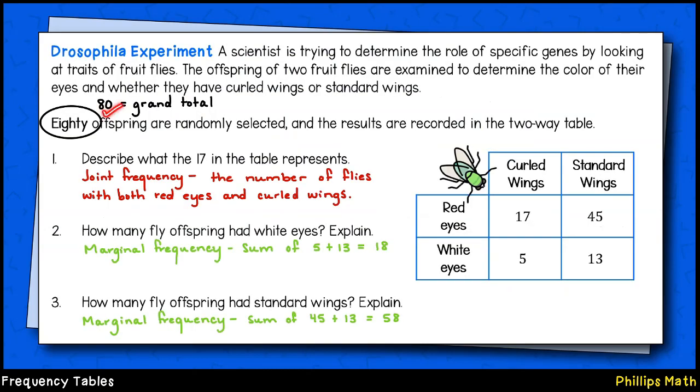One final example. We're told that 80 fruit flies are selected for this experiment. The two-way table is complete on the right-hand side. The first question says, what does the 17 represent in the table? Well, 17 is the joint frequency of curled wings and red eyes. These 17 flies have both curled wings and red eyes.